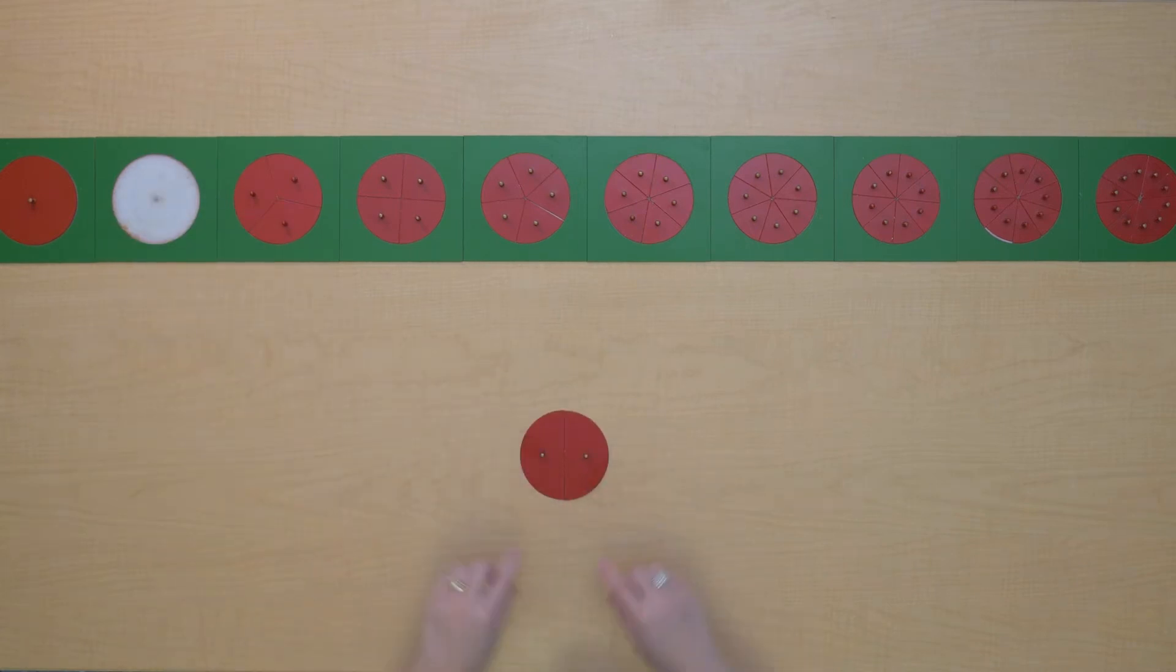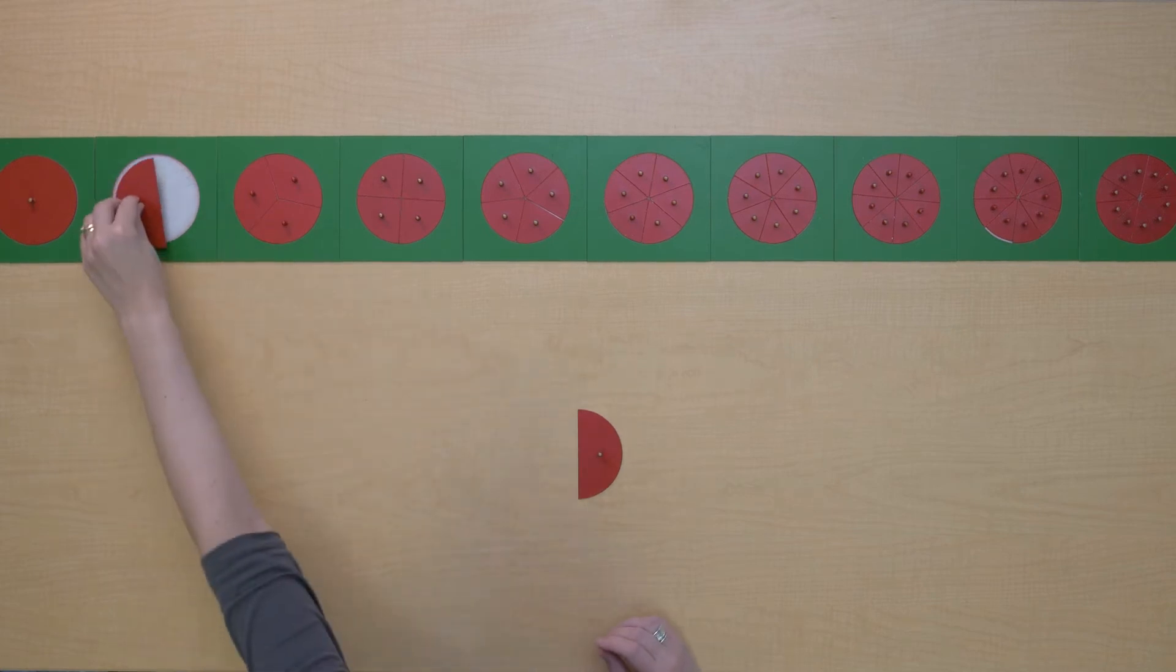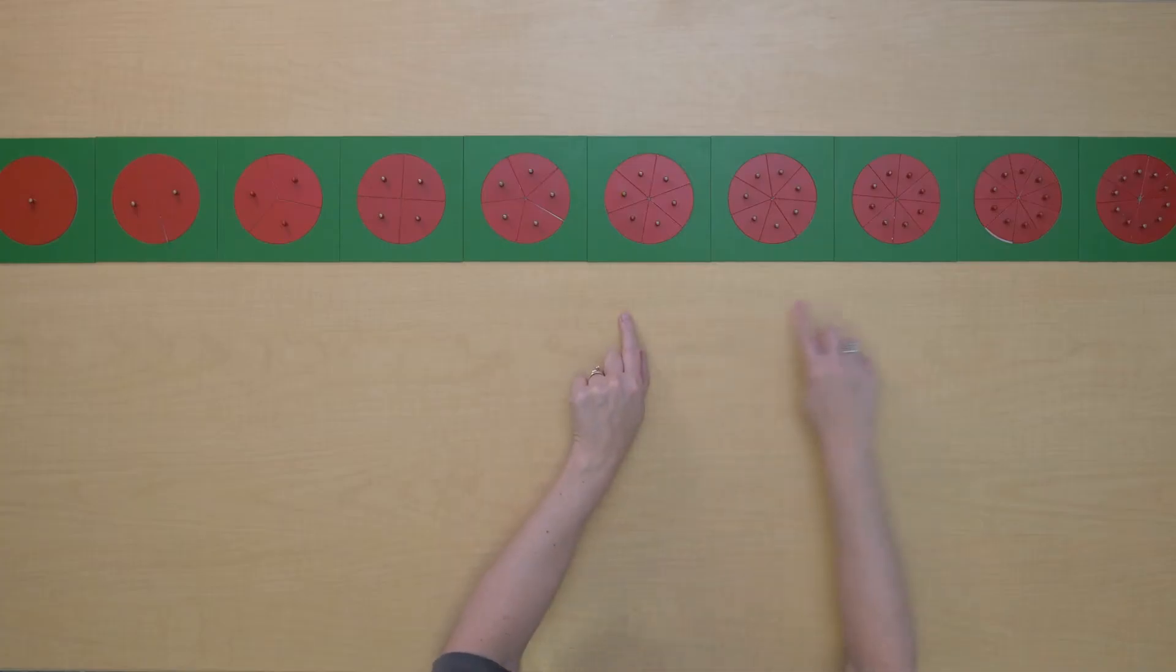Here I have another unit but it's made up of two congruent pieces. They're exactly the same. So we have another unit made up of two pieces and look at all my fractions here. All of them are units made up of pieces that are exactly the same.